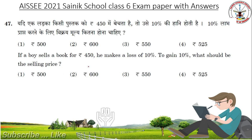If a boy sells a book for 450, he makes a loss of 10%. To gain 10%, what should be the selling price? Answer: 550.